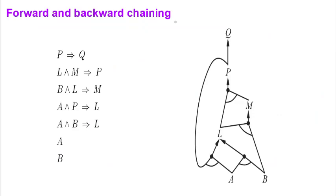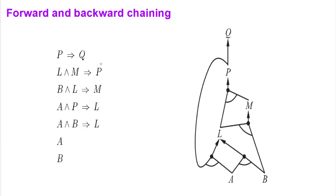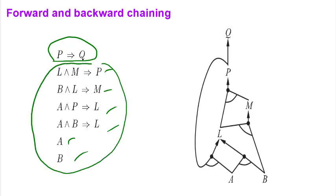We are given some clauses — horn clauses — and some facts. These horn clauses can be converted to implication form. We need to prove a goal, specifically whether P implies Q. What we do is convert these clauses into a tree form. From the tree form we can reason about the known facts A and B.